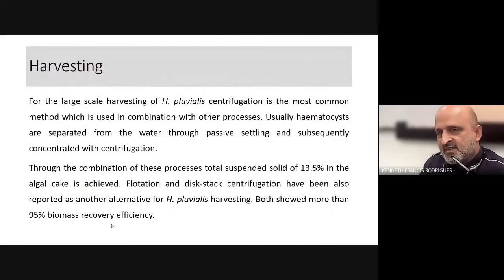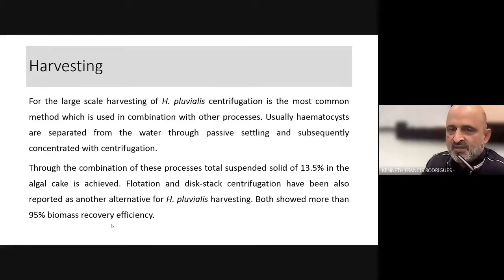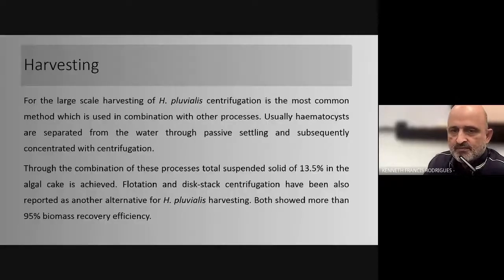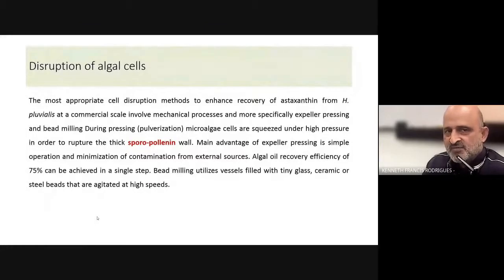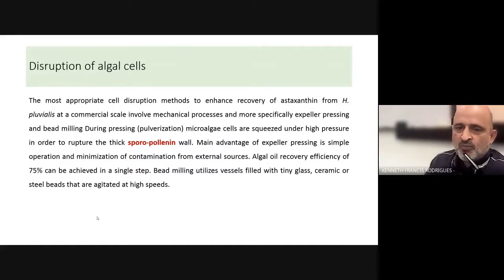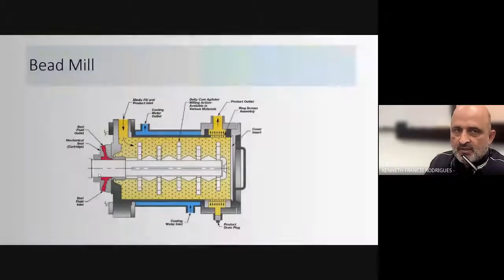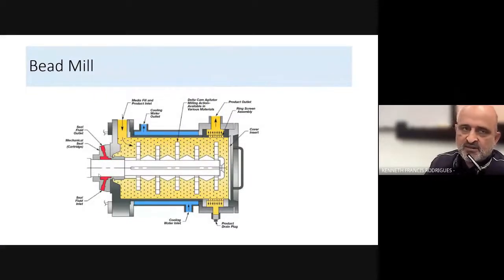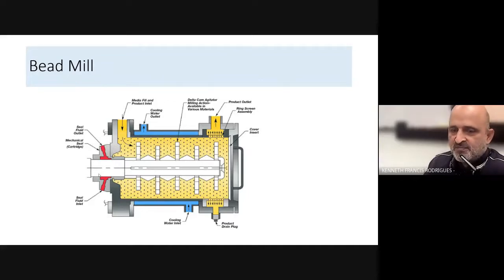Harvesting of algae is an energy-intensive step and centrifugation is one of the means by which you recover the algae from the culture medium. A continuous centrifuge is generally utilized to recover the algal biomass. The next stage, which is very challenging, is the disruption of the algal cells to obtain the secondary metabolite. This is done using extruders, expellers, or a bead mill to break open the algal cells. In the bead mill, the algae are pulverized using microscopic beads which beat upon the algal cells and break them open to release the astaxanthin or other biological molecules.